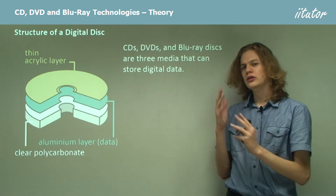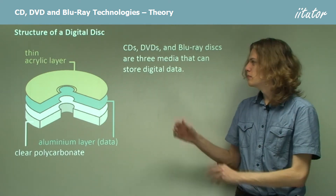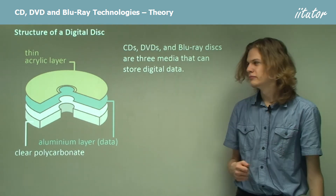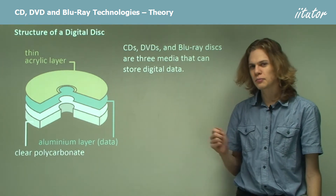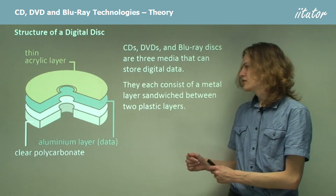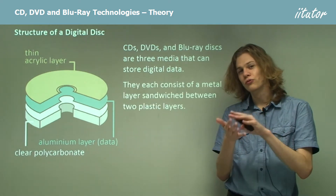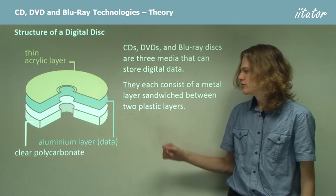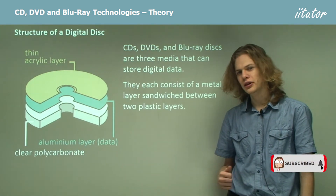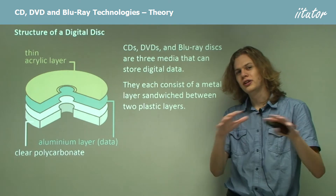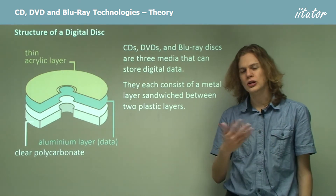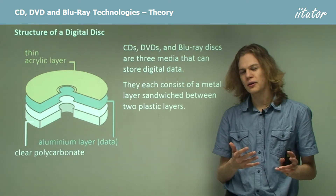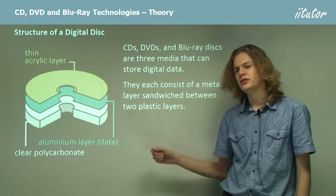Now all three sorts of disks are storage media — that is, a medium in which we can store data. They're all roughly the same shape, which we can see over here. They consist of basically a metal reflective layer between two plastic layers. The bottom layer is clear polycarbonate, labeled over here. The top layer is a sort of protective acrylic layer made of transparent plastic, and in the middle we have a reflective metal layer, and it's this layer on which the data is stored.